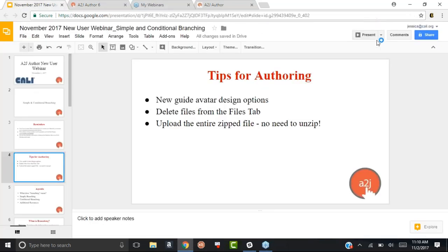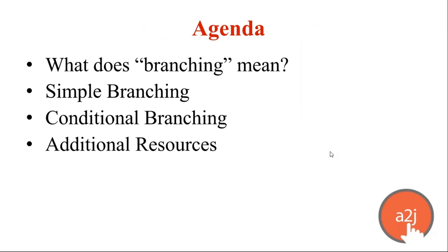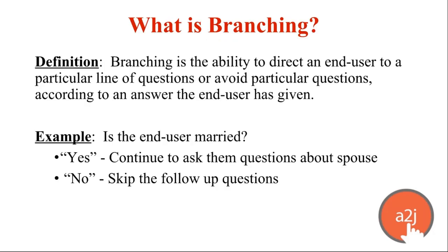Those are two examples of new-ish things in A to J Author. Going back to our presentation — on our agenda today for simple and conditional branching, we're going to talk about what branching means, simple branching, conditional branching, and then additional resources and time for questions. So, what is branching? Branching is simply the ability to move your end user through a particular line of questions, or to avoid particular questions, according to answers they've given you.